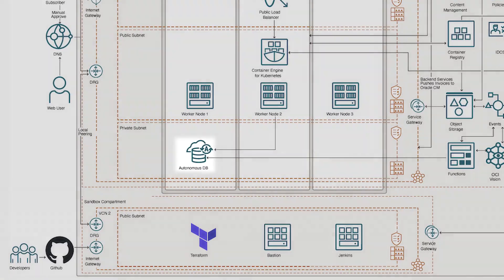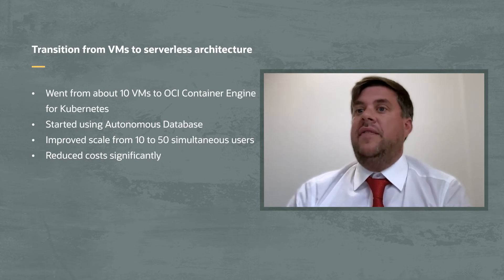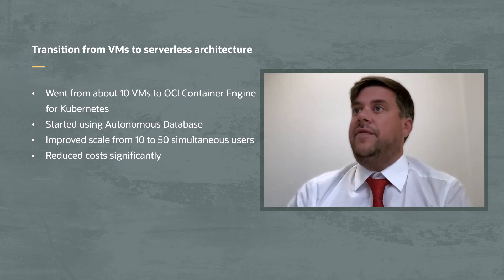We originally had EasyCloud running on a variety of different VMs — we were running in 10 different VMs. But since then, we've moved to more of a serverless technology. We've been doing a lot of load testing and QA testing in our environment, and we were maxing out around 10 simultaneous users with a reasonably large footprint of VMs in OCI. So we decided to evaluate moving to more serverless technologies. With everything running on serverless, we're using Oracle Autonomous Database as the back-end and the Oracle API Gateway for services. We were able to reduce our costs quite significantly. We can now support over 50 simultaneous users, and the cost of the infrastructure has gone down significantly.